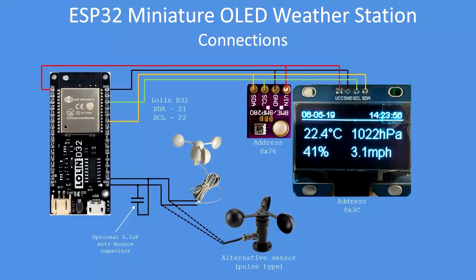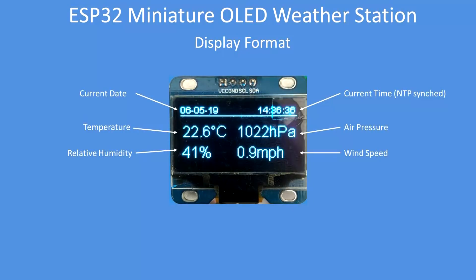With the cheaper anemometers they do suffer from switch bounce, so you may have to add a 0.1 microfarad anti-bounce capacitor across the GPIO pin, although you can use any GPIO pin.